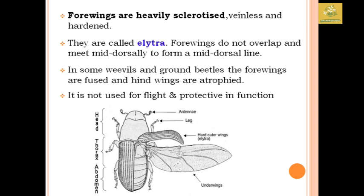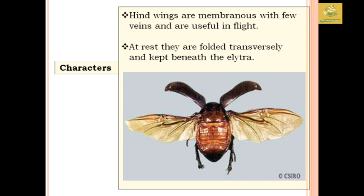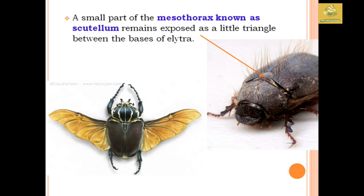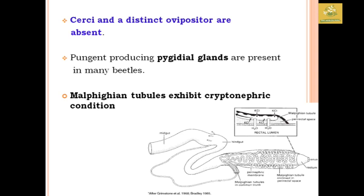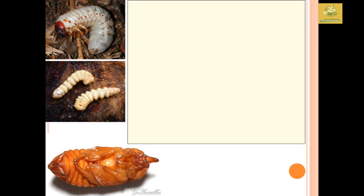The hind wings are membranous and used for flight. At rest, they are transversely folded and kept beneath the elytra. A small triangular part present in the mesothorax is called the scutellum. Cerci and distinct ovipositors are absent in Coleoptera insects. Pygidial glands are present in many beetles, used for protection from predators. The Malpighian tubules exist in a siphon-tonic condition in these groups.